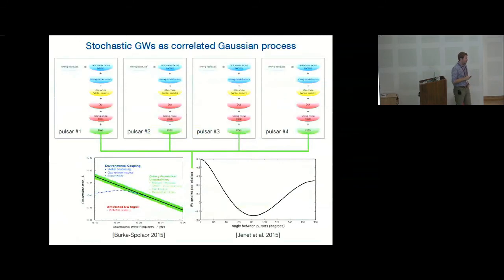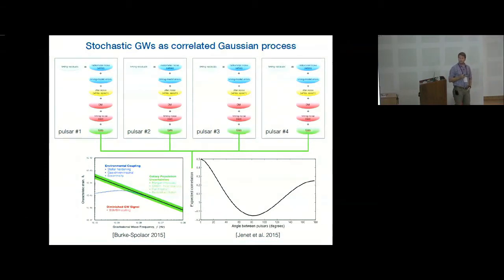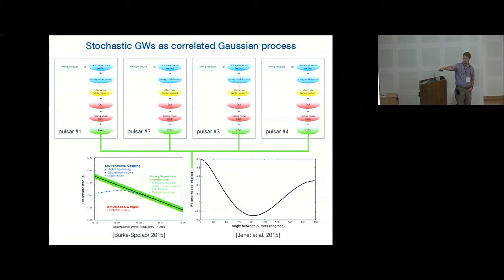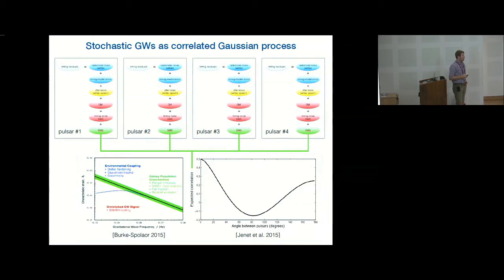That's one pulsar, but we have a PTA — a Pulsar Timing Array. We take all these different models, and the gravitational waves are treated as a correlated Gaussian process: correlated in time across multiple pulsars, and also correlated spatially with the pulsar locations in the sky. The time correlations are some power law, maybe with a turnover. The spatial correlation is the Hellings and Downs curve — the expected correlation between two pulsars at different angular separations under a stochastic background. This is the real smoking gun: gravitational waves are the only thing that give you this kind of spatial correlation.